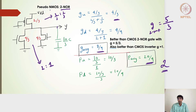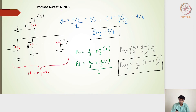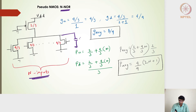For an n-input NOR gate, the PMOS size remains 2/3 and all parallel pull-down NMOS transistors remain 4/3 each. The logical effort stays the same: 4/3 for going up, 4/9 for going down, with an average of 8/9 — independent of the number of inputs and much lower than 5/3.